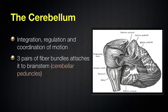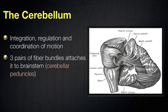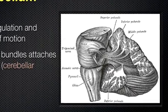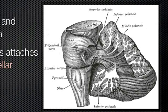Here's a different picture of the cerebellum — it's a drawing from Grey's Anatomy — and here you can see the brain stem. At the top we have the midbrain, then the pons, and the medulla. What I want to emphasize is that we have three pairs of fiber bundles, called the cerebellar peduncles, that attach the cerebellum to the brain stem.